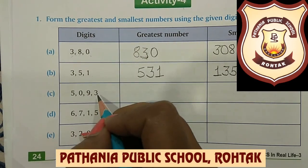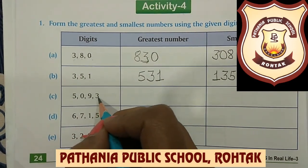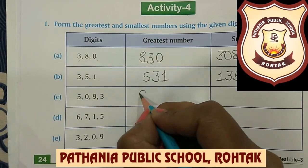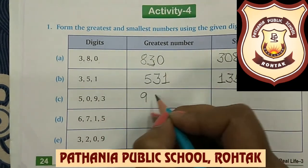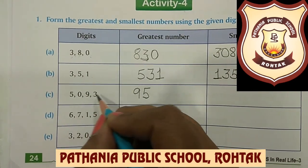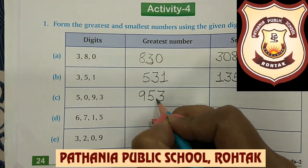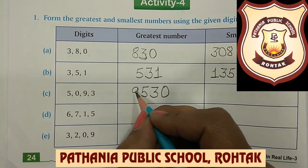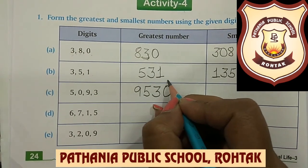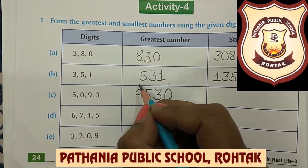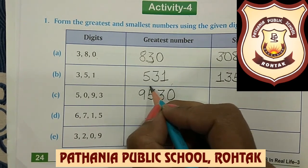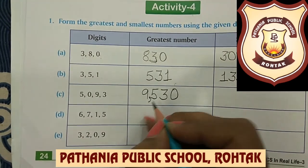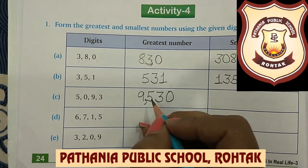Now Part C: the digits are 5, 0, 9, and 3. To form the greatest number, the greatest digit is 9, so we write 9 first. After 9, the next greatest is 5, so we write 5. Then 3, and 0 is the smallest digit, so we write 0 last. The number formed is 9,530. Here: 0 is the 1's place, 3 is the 10's place, 5 is the 100's place, and 9 is the 1,000's place. Since 1's, 10's, and 100's form one period, we put a comma after that period. So the greatest number is 9,530.